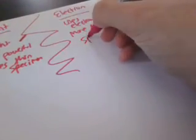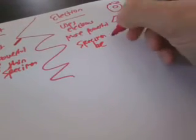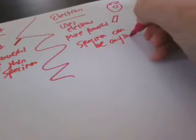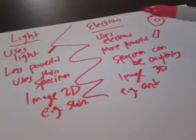So as I mentioned, light microscopes use a thin specimen. A specimen can be anything for an electron microscope. It could be metal, it could be a ball, it could be anything. A specimen can be anything. That's why it's so useful. And the image is in 2D for a light microscope. Image is in 3D for an electron microscope. Example, an ant. Example, skin. They're the two types of microscopes. Electron microscopes are more powerful.